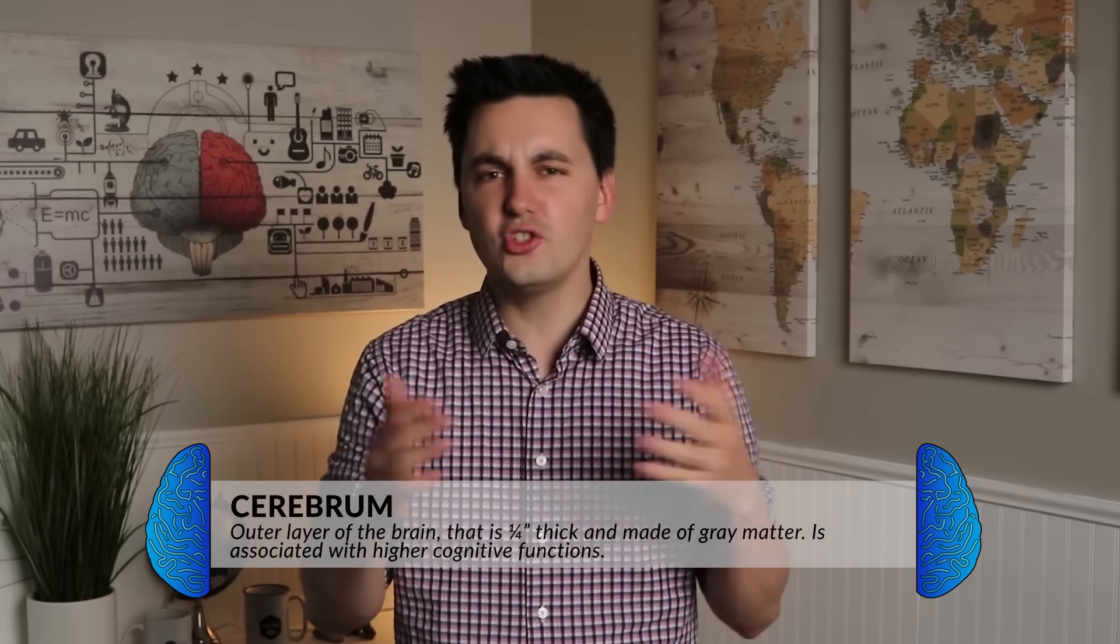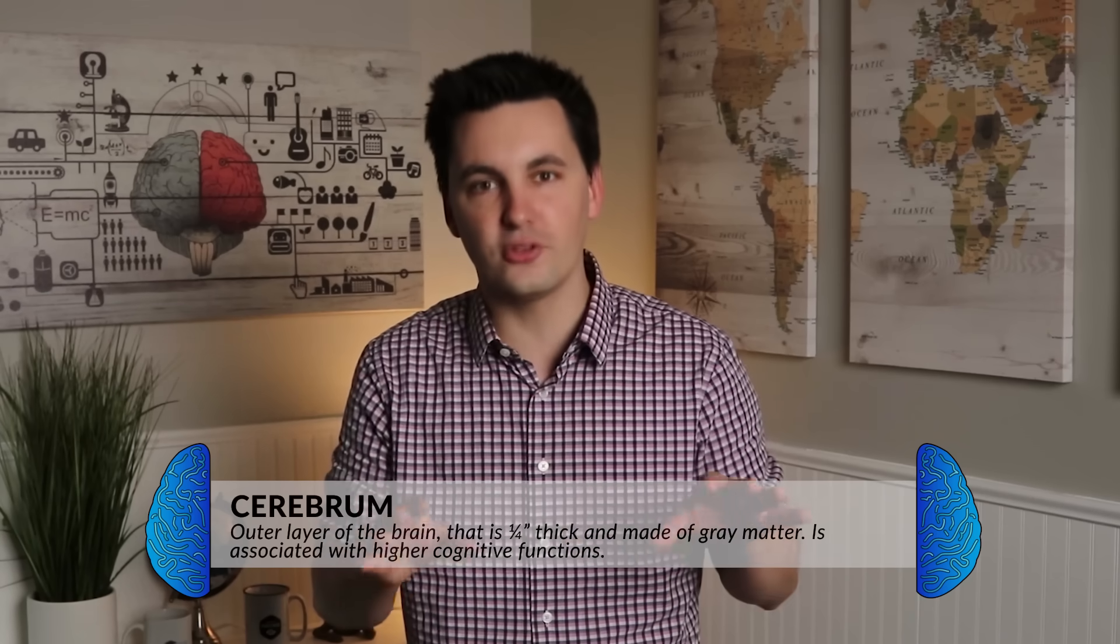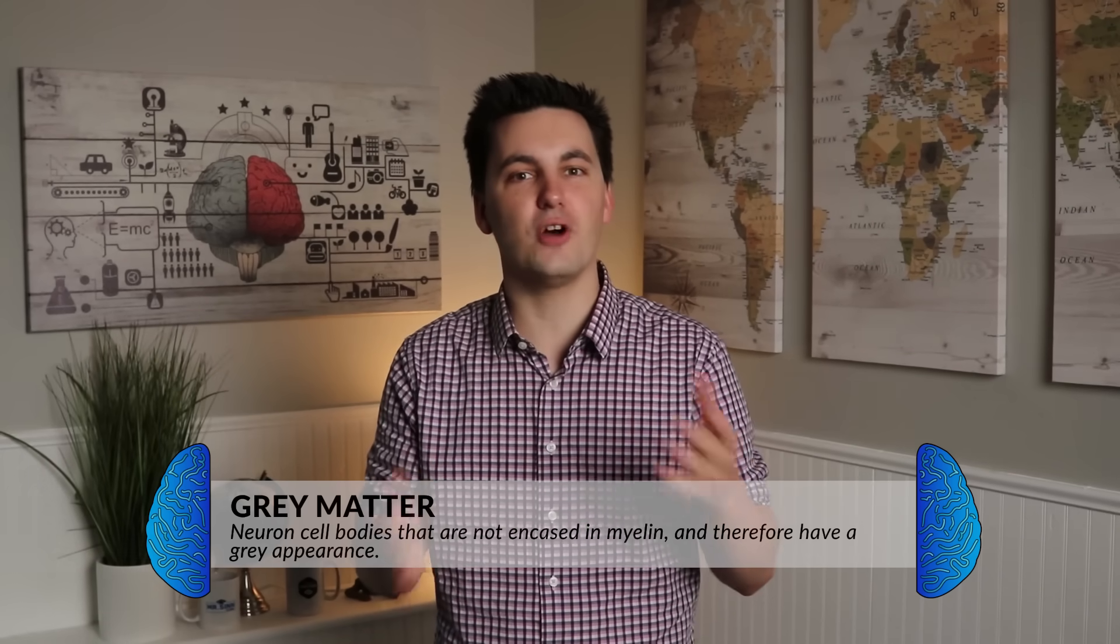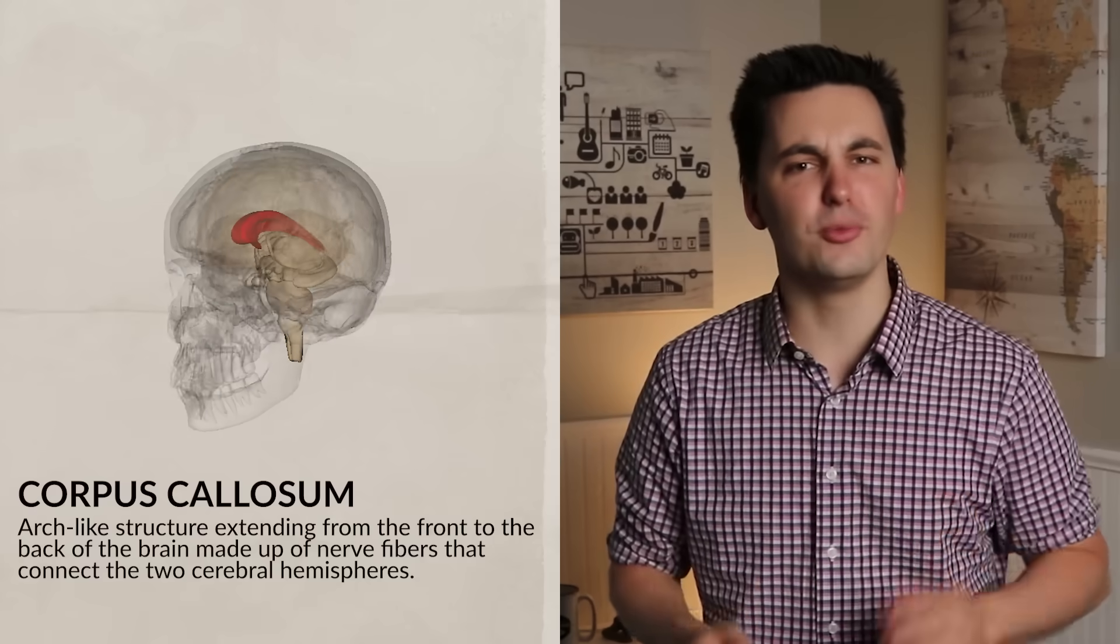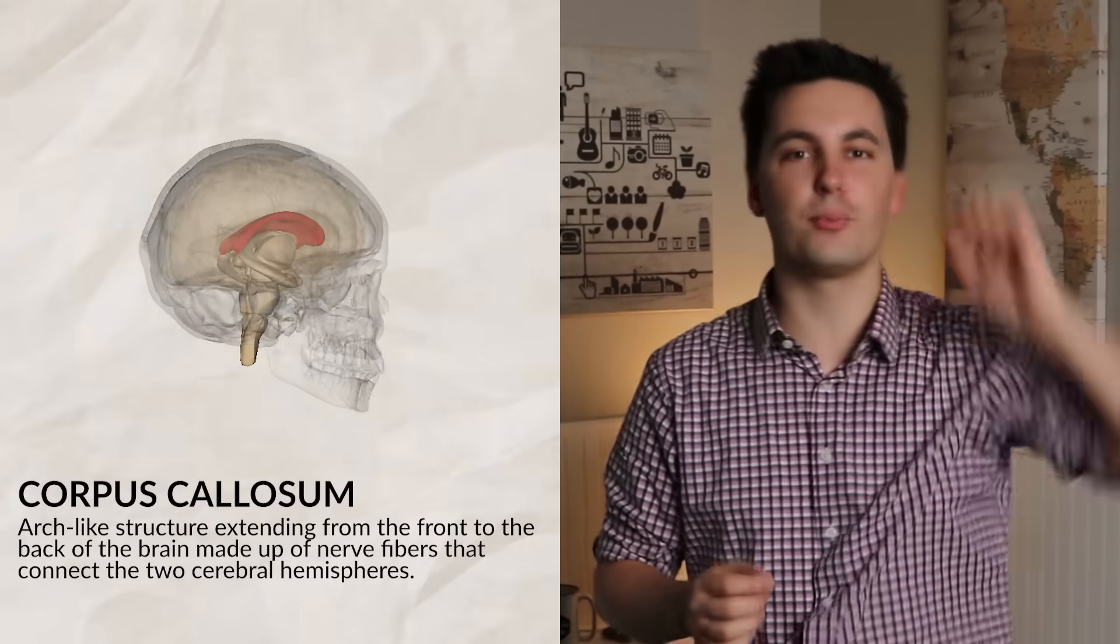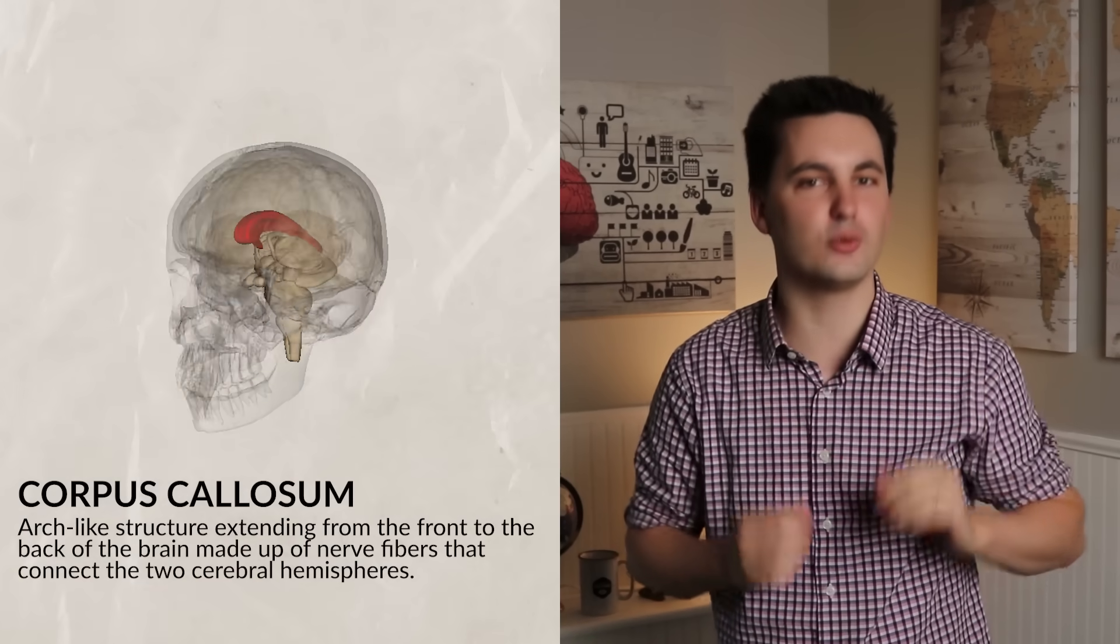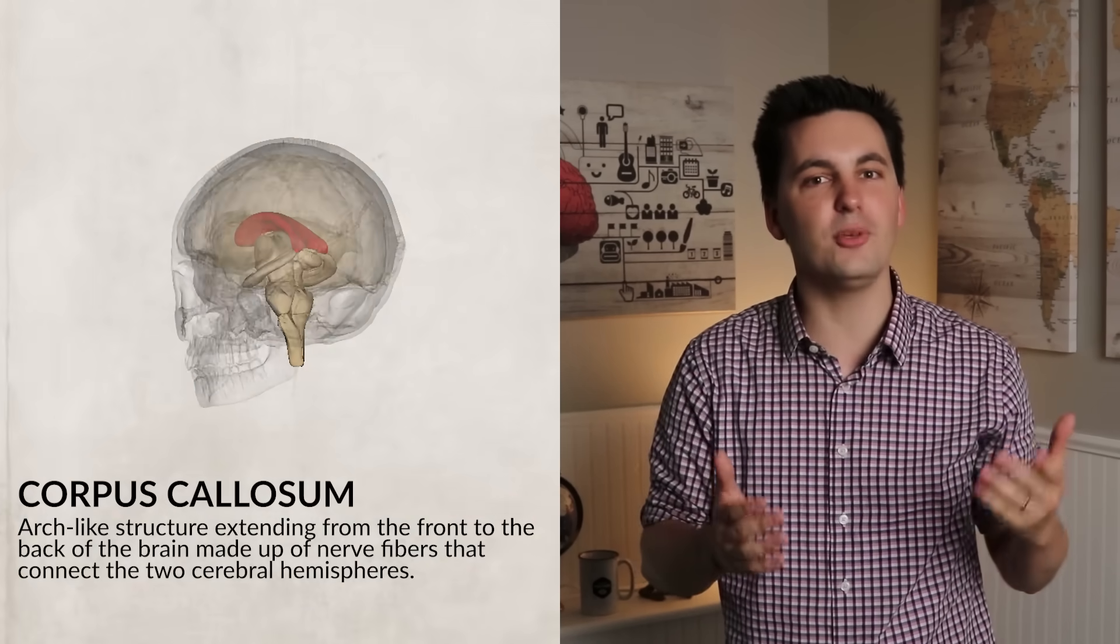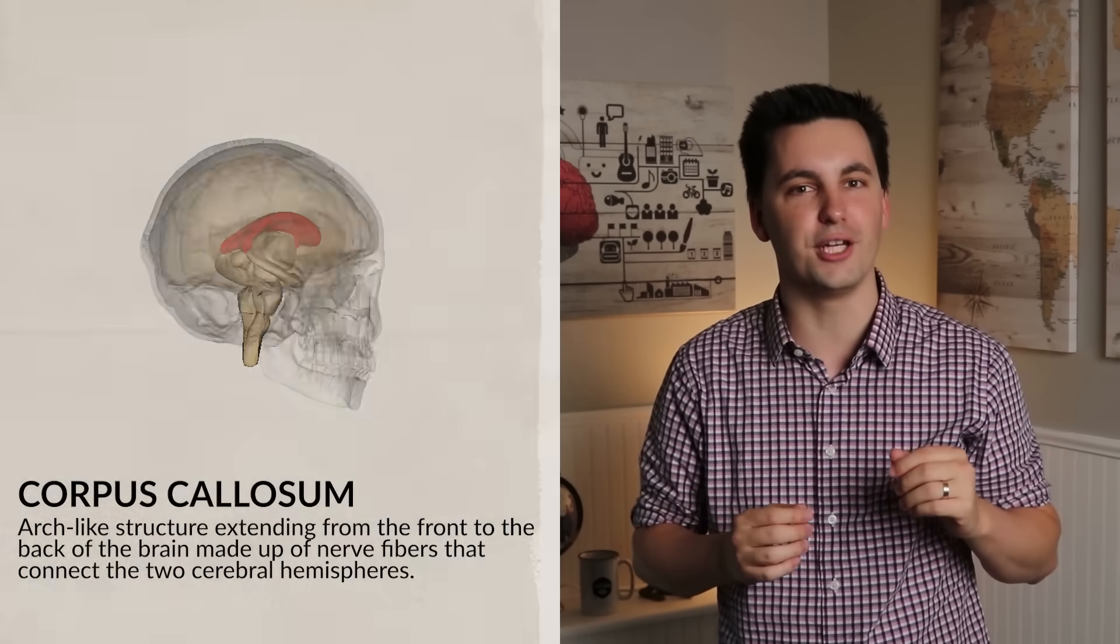Moving deeper into the cerebrum, we have the cerebral cortex, which is a thin outer layer of billions of nerve cells that cover the whole brain. These neurons are called gray matter. All higher cognitive functioning happens here. Inside of the cerebral cortex is the corpus callosum. This structure is shaped like an arch that stretches from the front to the back of the brain. It's made up of different nerve fibers that connect the two cerebral hemispheres. This allows your hemispheres to talk and communicate with one another. One trick to remembering this is to think about the corpus callosum as calling the other hemisphere to communicate.